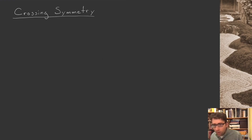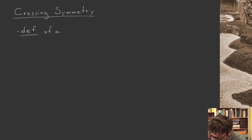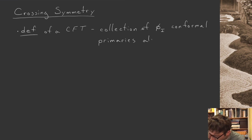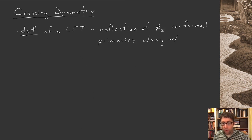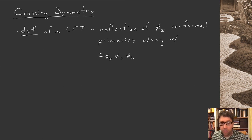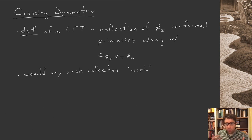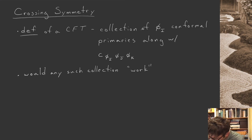Last week we ended our discussion with a way of defining conformal field theory. A definition of a CFT is a collection of conformal primary operators phi_i, along with their three-point functions — more specifically the constants in those three-point functions, which is the only degree of freedom left after applying the constraint of conformal symmetry. Given this set, you can ask: would any such collection work? If you give me your favorite set of three-point function coefficients along with the dimensions and representations of the Lorentz algebra for all the conformal primaries, could I define some consistent conformal field theory? The answer is no.